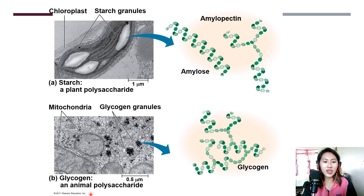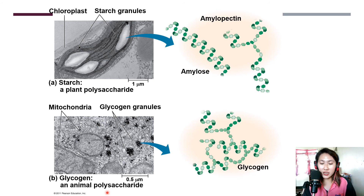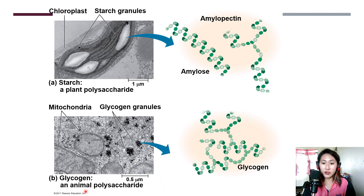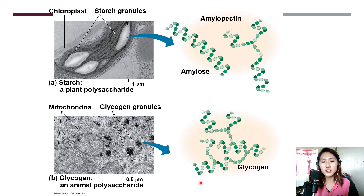Next we have glycogen, which is the energy storage for animals and humans. As mentioned earlier, glucose is the readily available energy source in the human body. When there is excess glucose that the human body does not use, it is converted into glycogen for energy storage. Then, when the body needs it, glycogen is converted back into glucose. Here is an illustration of glycogen.